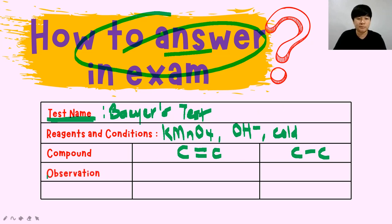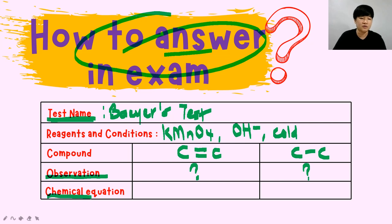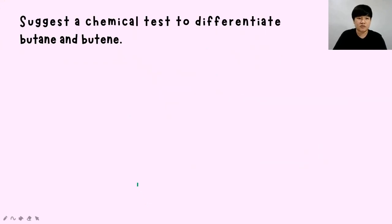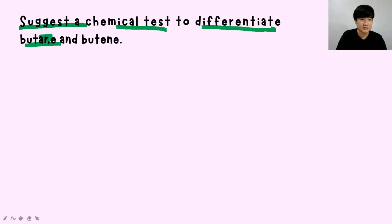Next, record the observation for each compound under the Bayer test. For example, the exam question asks you to differentiate butane (a four-carbon straight chain with all single bonds) and butene (a four-carbon chain with a double bond on the first carbon). Write down the observation for each compound.